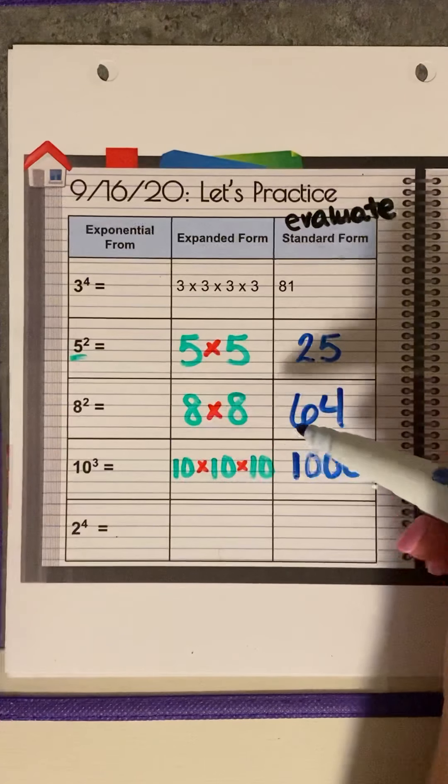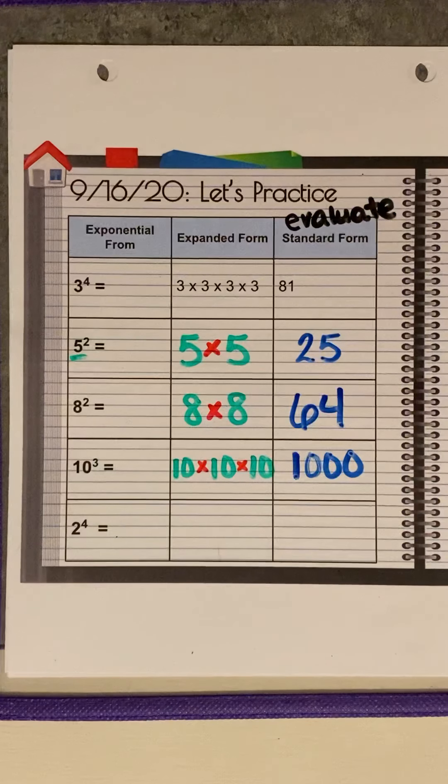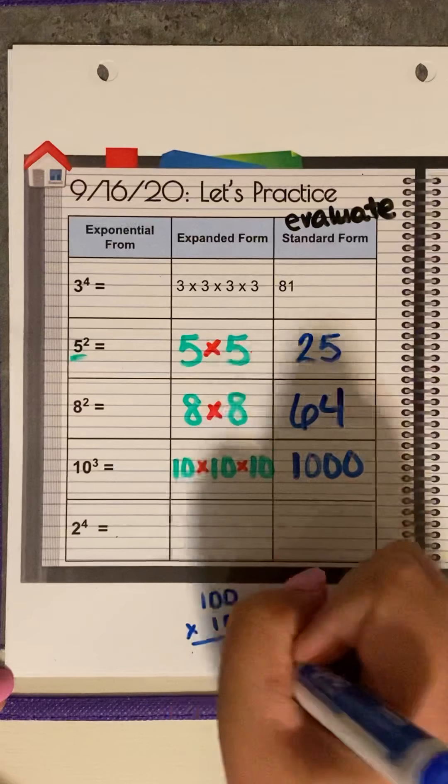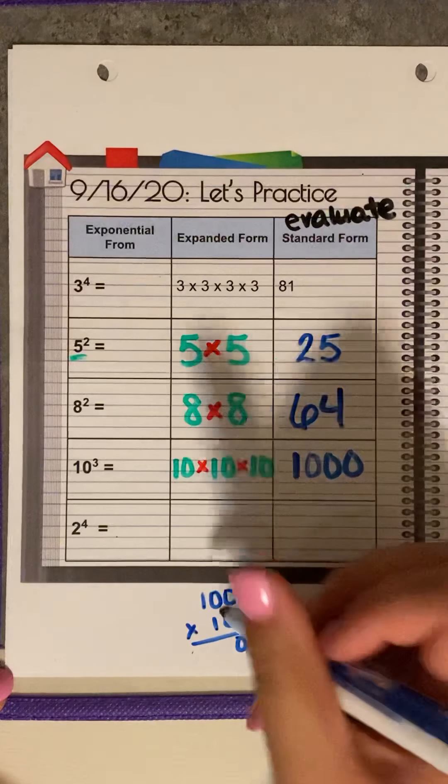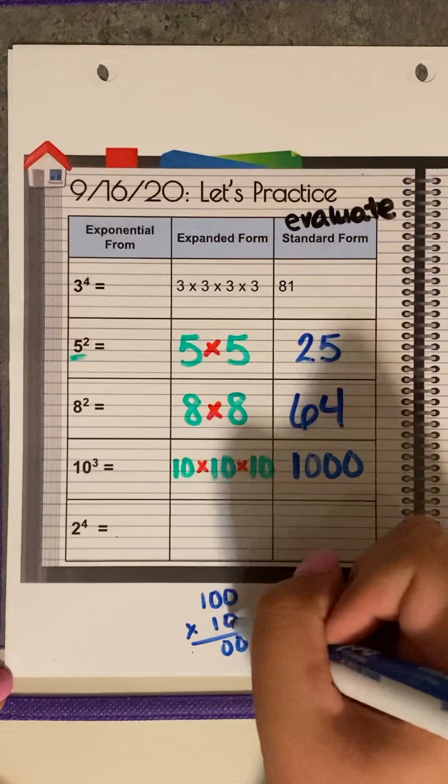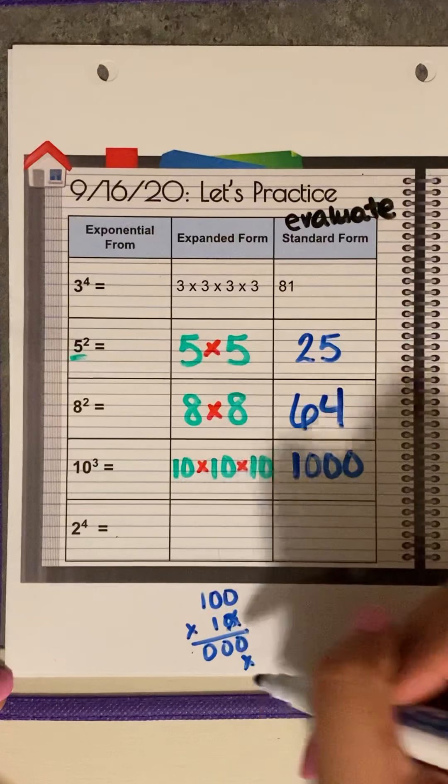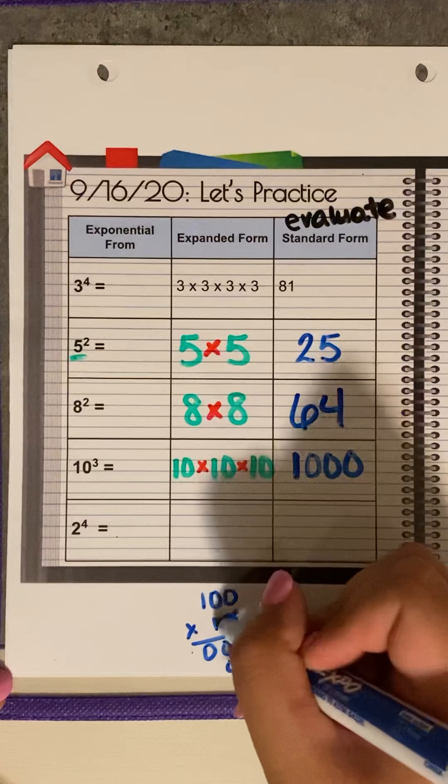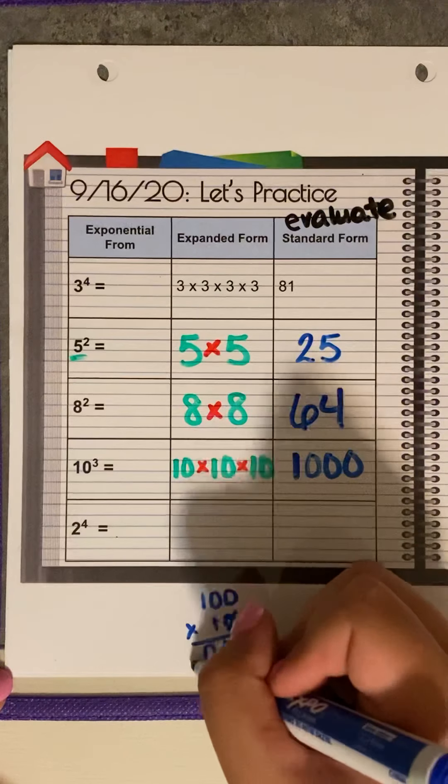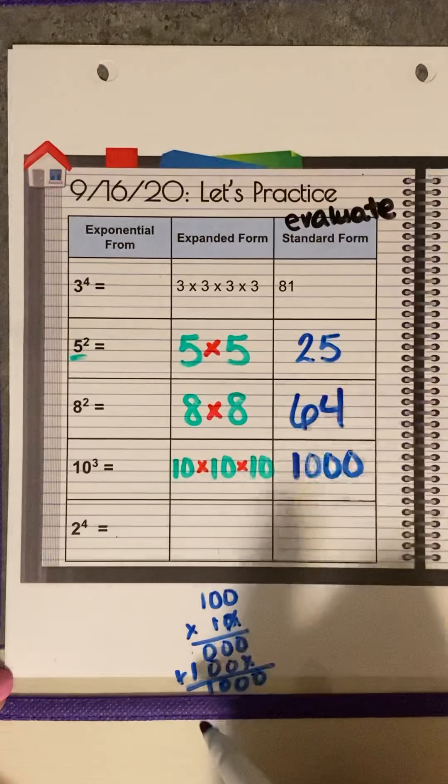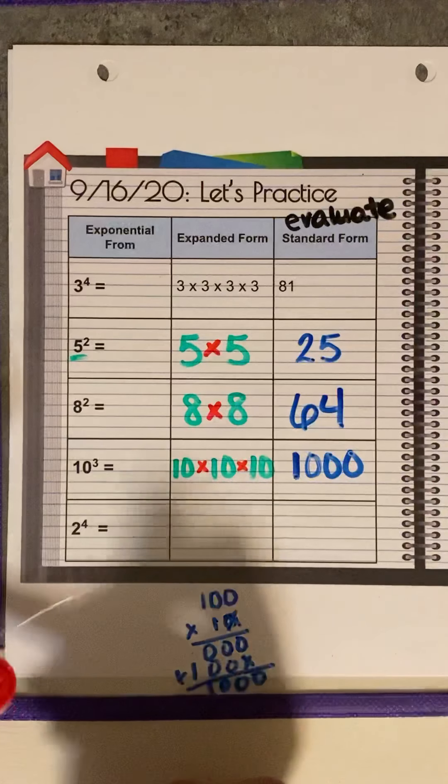So ten times ten is going to be a hundred. And then times ten is going to be a thousand. So if we have one hundred times ten, we can test it out here. Zero times zero is zero. Zero times zero is zero. Zero times one is zero. We're done with this. We're going to put our placeholder. One times zero is zero. One times zero is zero. One times one is one. Add. And you have zero, zero, zero, one. And it is one thousand. And we are correct.